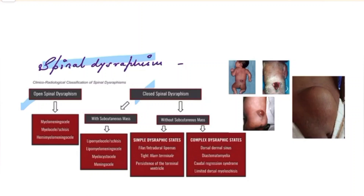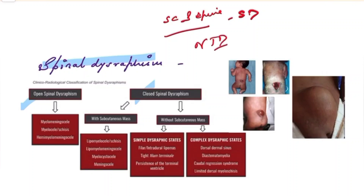Congenital malformations of the spinal cord and spine are described under this umbrella term, spinal dysraphism. The most common type of birth anomaly is congenital heart disease, but the second most common type is neural tube defects, and spinal dysraphisms are one of the subtypes. These are most common in the lumbosacral spine, followed by the dorsal spine, followed by the cervical spine.